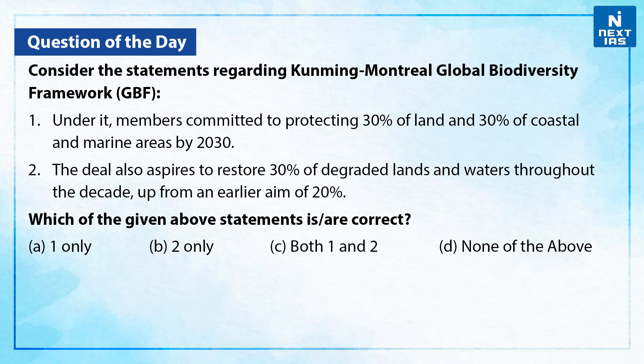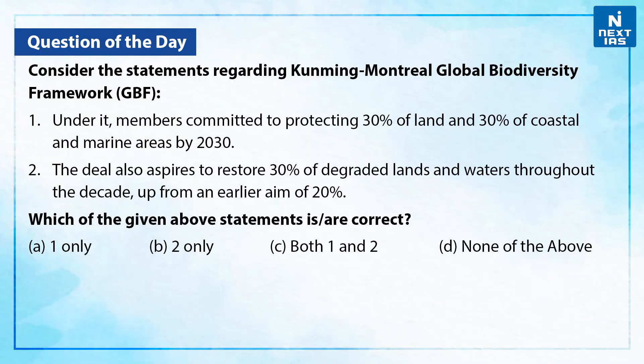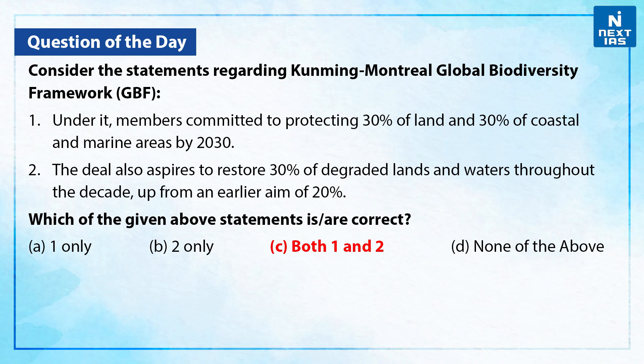Now let's take a practice question. Consider the following statements regarding the Kunming-Montreal Global Biodiversity Framework. Statement 1: Members committed to protecting 30% of land and 30% of coastal and marine areas by 2030. Statement 2: The deal also aspires to restore 30% of degraded lands and waters throughout the decade, up from an earlier aim of 20%. Which of the statements given above are correct? You may take a moment and give your answer in the comment section below. The correct answer is C — both Statement 1 and Statement 2 are correct.